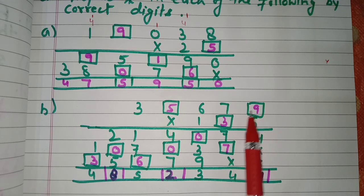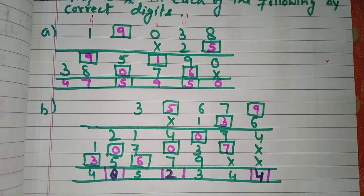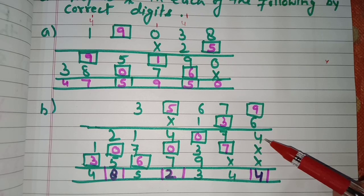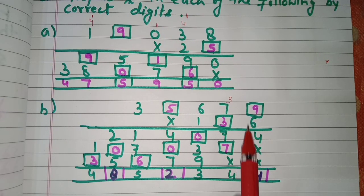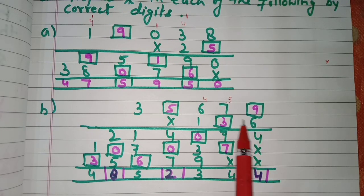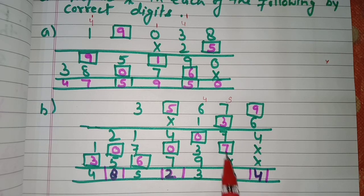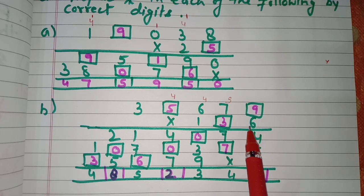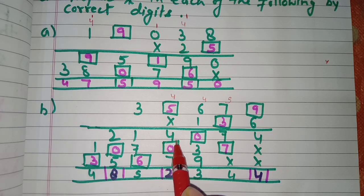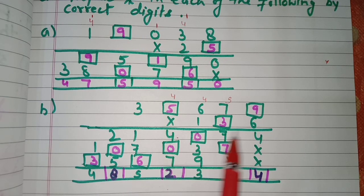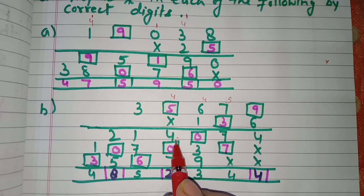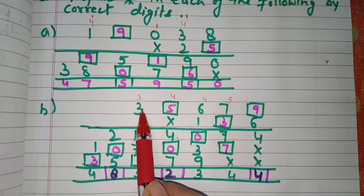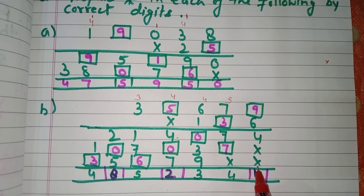For the next problem, digits written in purple are missing. Multiplying by six: six nines are 54 — write four, carry five. Six sevens are 42 plus five is 47 — carry four. Six sixes are 36 plus four is 40 — write zero, carry four. Six fives are 30 plus four is 34 — carry three. Six threes are 18 plus three is 21.